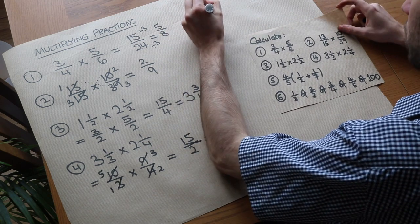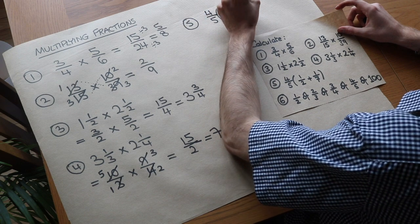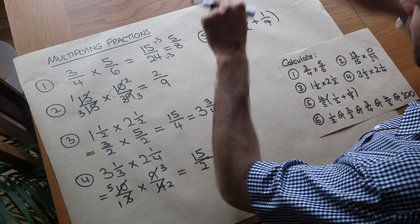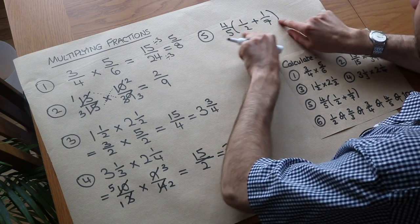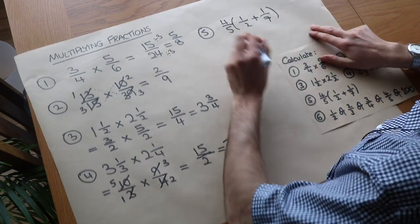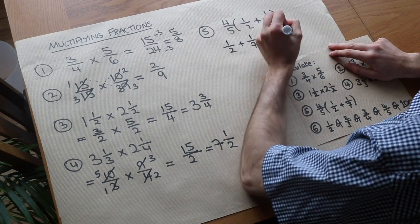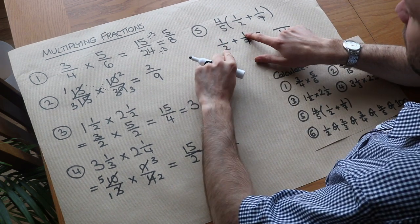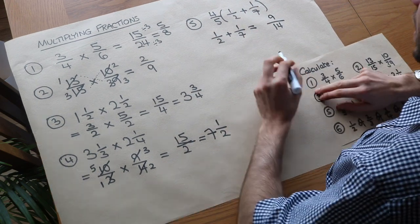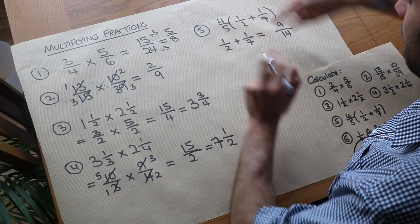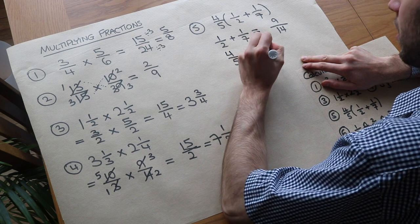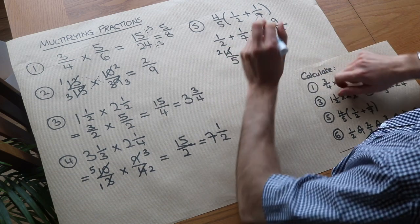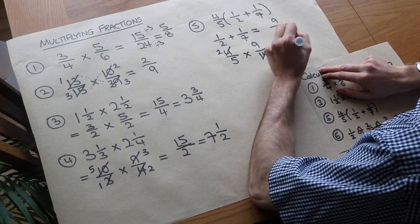Next we have 4 fifths times the bracket of half plus a seventh. Remember from algebra that two things next to each other means multiply, so this is 4 fifths times (half plus a seventh). We work out the bracket first: half plus a seventh — multiply the denominators to get 14, cross-multiply the numerators: 1 times 7 is 7, plus 2 times 1 is 2, giving 9 fourteenths. Now we do 4 fifths times 9 fourteenths: 4 and 14 both divide by 2, giving 2 and 7, so the answer is 18 over 35.